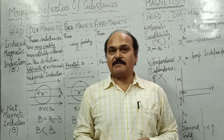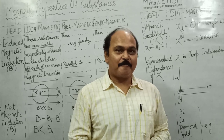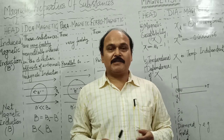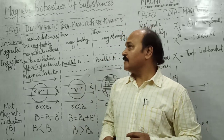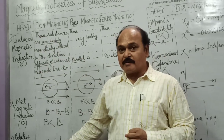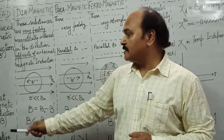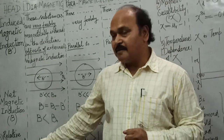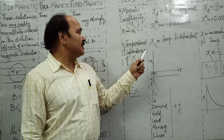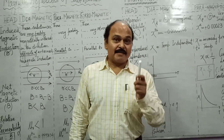We will compare them on a comparative basis — comparing their behavior in a magnetic field, how these substances are different from each other and how they are similar. The heads under which we are going to discuss them are: induced magnetic induction, net magnetic field, permeability, magnetic susceptibility, and temperature dependence of magnetic susceptibility.